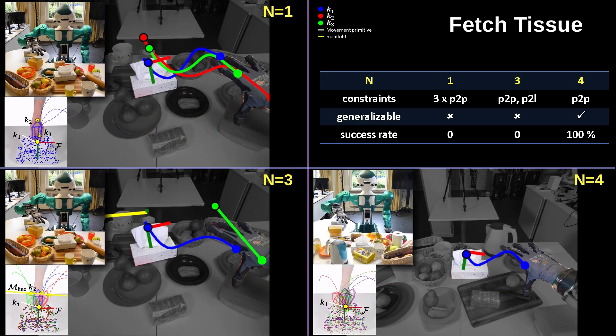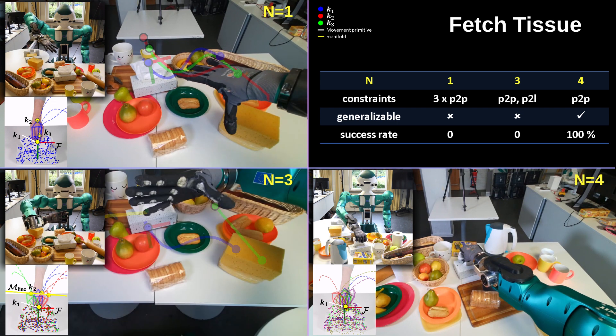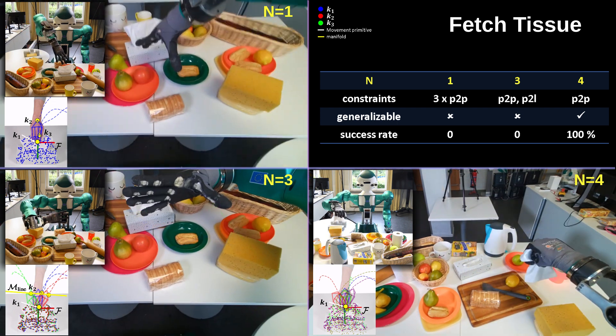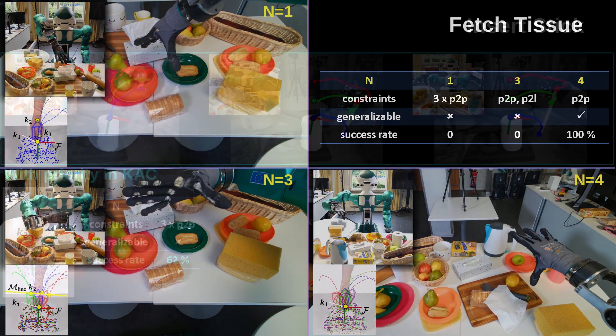Similar task representations are learned for the fetch tissue task where the point-to-point constraint is used to represent the grasping point on the tissue. And we got a 100% success rate, even with visually very different tissue boxes.